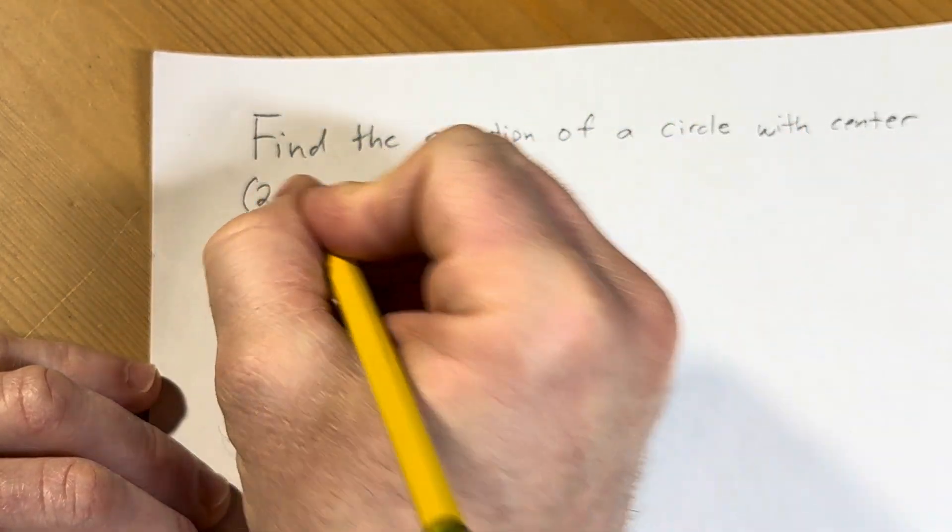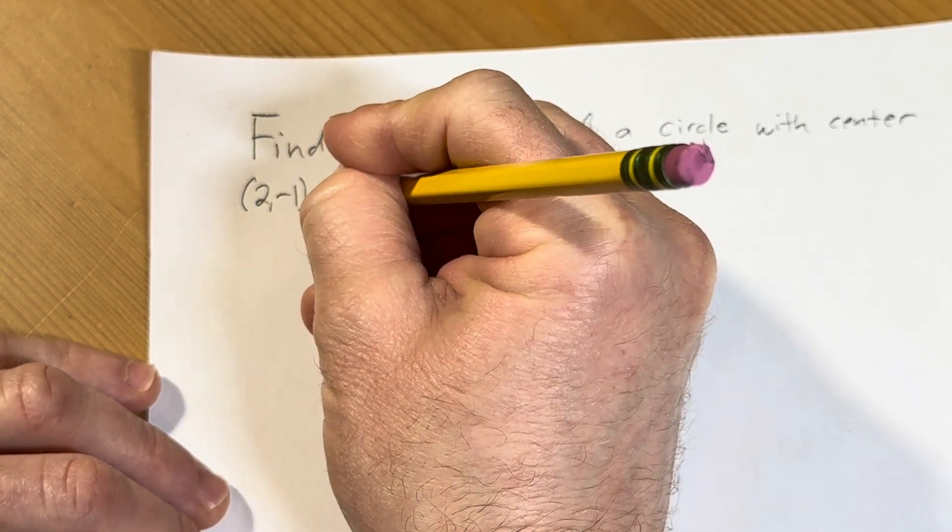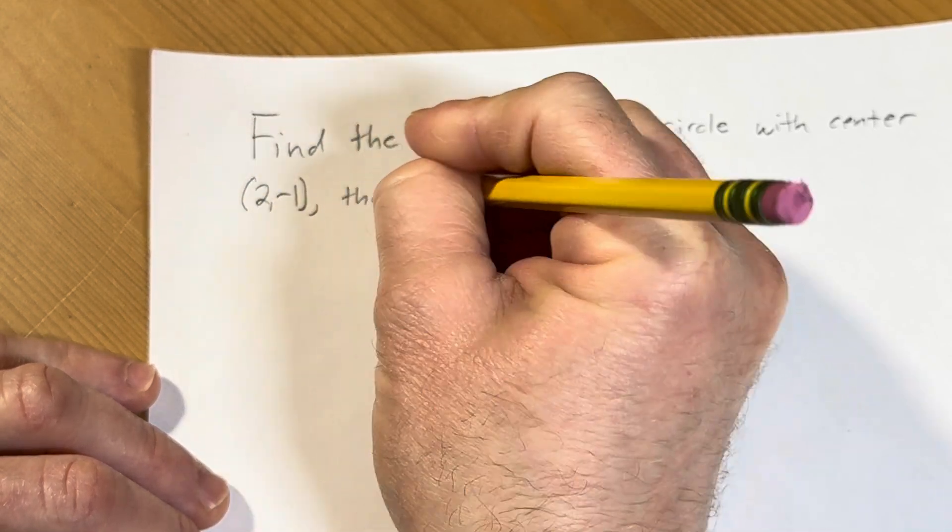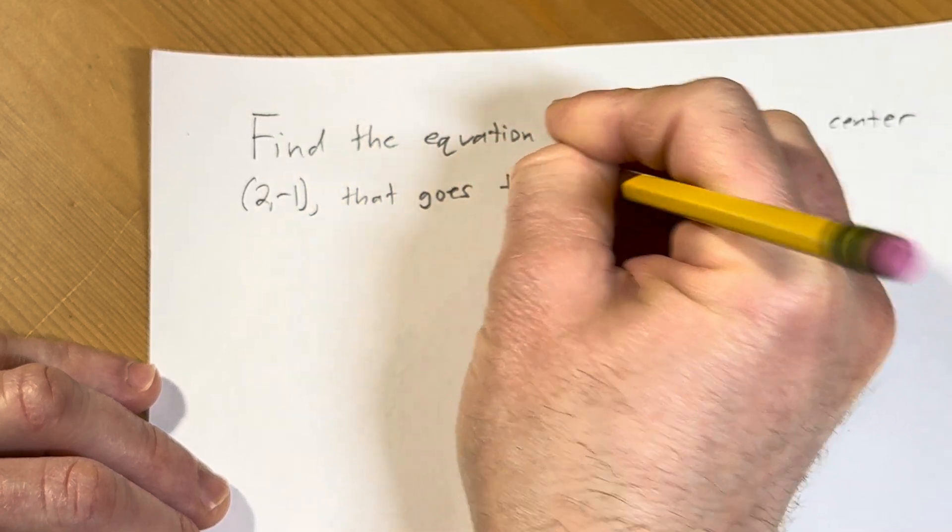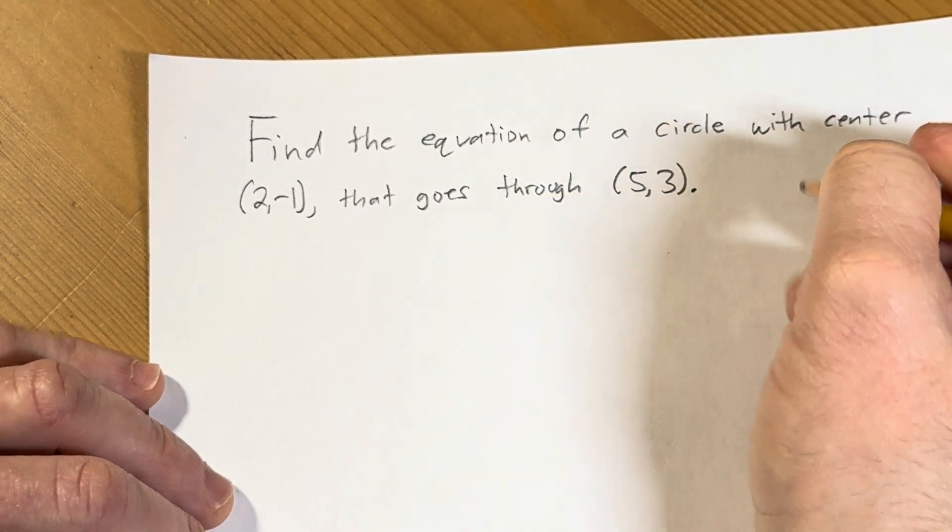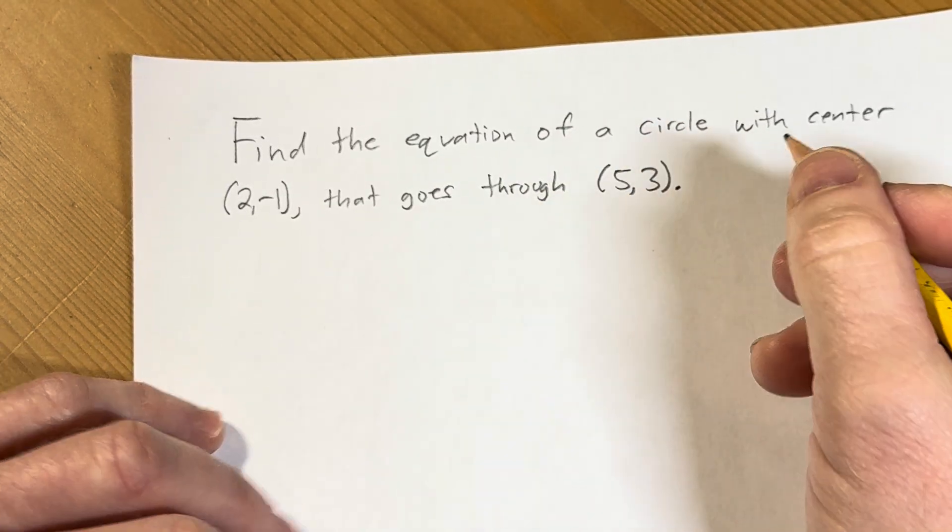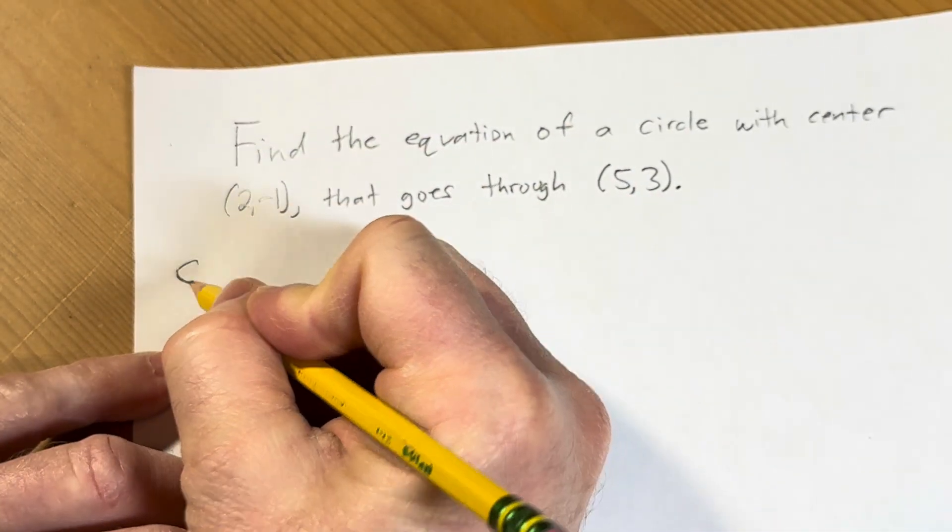Okay, so find the equation of a circle with center 2, negative 1, that goes through or passes through the point (5, 3). So it's also going to go through that point or pass through that point. All right, let's go ahead and solve this solution.